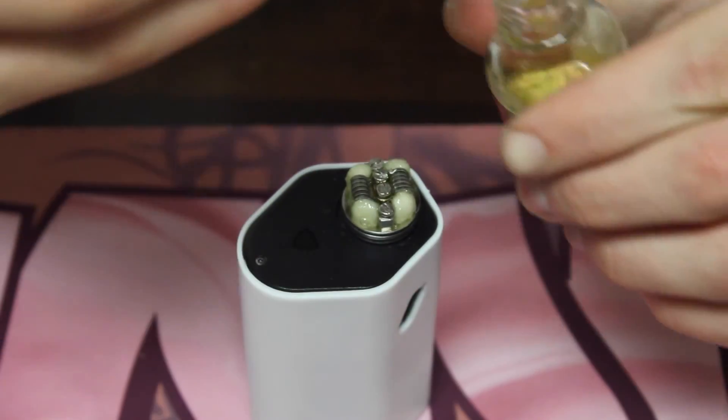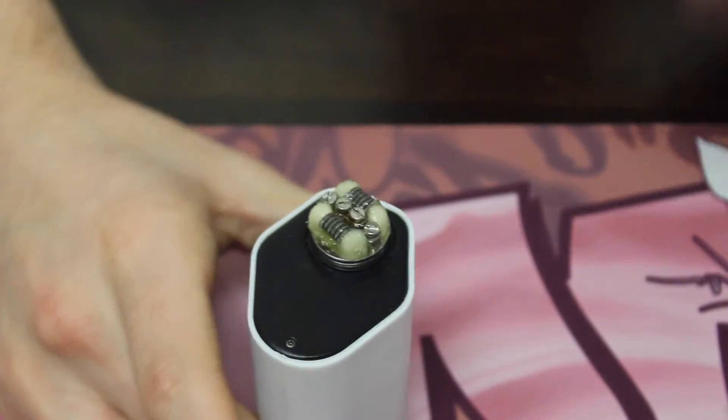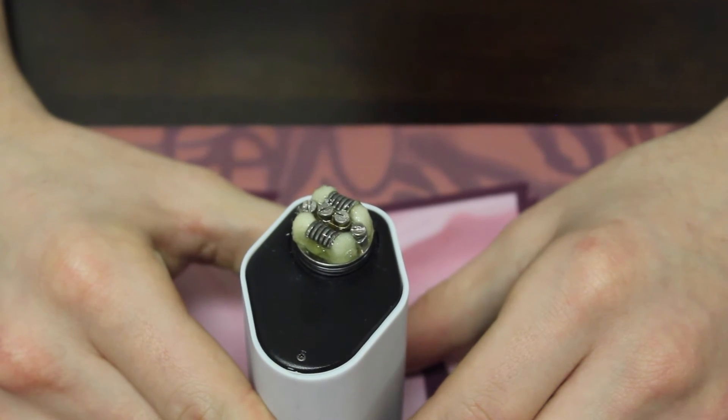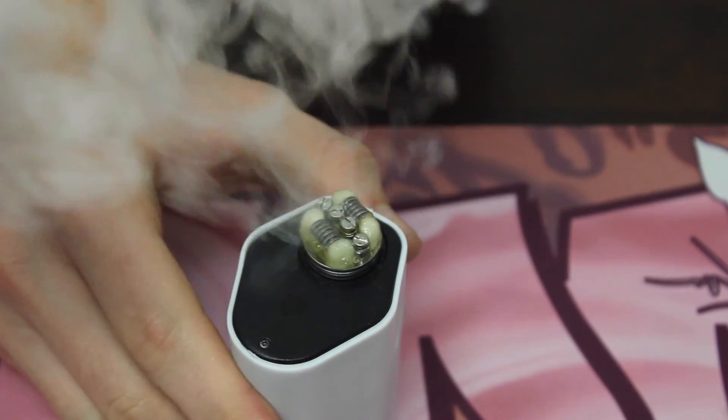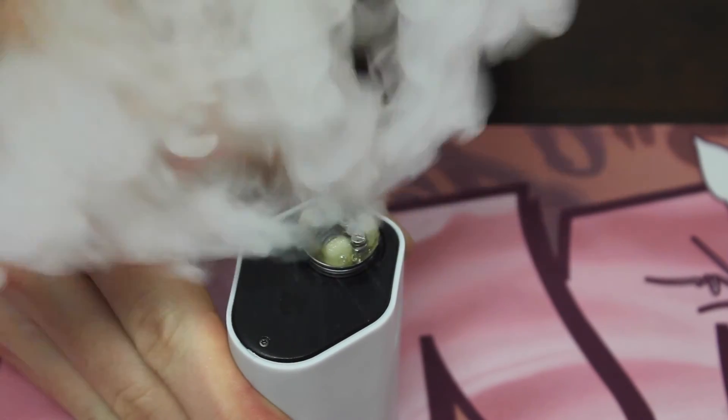Now after you have your cotton completely drenched, it should look like so. I'm going to fire real fast, pulse it, get some of that excess juice out of it.